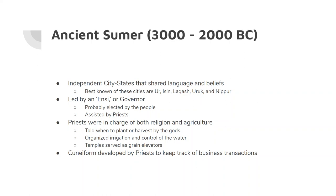Now this land of Ancient Sumer is a unique place because the Tigris River and the Euphrates River are fairly unpredictable. They're surrounded by desert, so there are no natural defenses — no trees, no mountains, nothing like that. Of these independent city-states, a couple are better known: there's the city of Ur, the city of Uruk, and the city of Nippur, and all these cities we think were led by somebody called an NC or a governor.